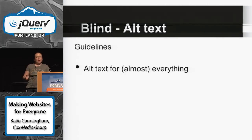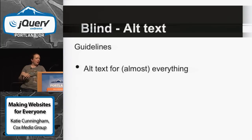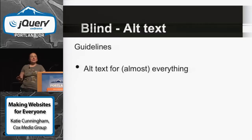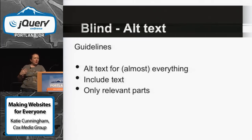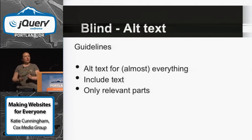Alt text: you want alt text for almost everything. There are exceptions — if you have a decorative icon or a spacer GIF, you don't need alt text. You're not enriching anybody's experience by saying 'image spacer.' You want to include the text that's in the image. Only talk about the relevant parts — don't get overly descriptive. The amount of text in the alt text should be directly proportional to the information you'd give a sighted user. If it's just a pretty image, just say 'pretty image of sunset.' You don't need to describe every duck.